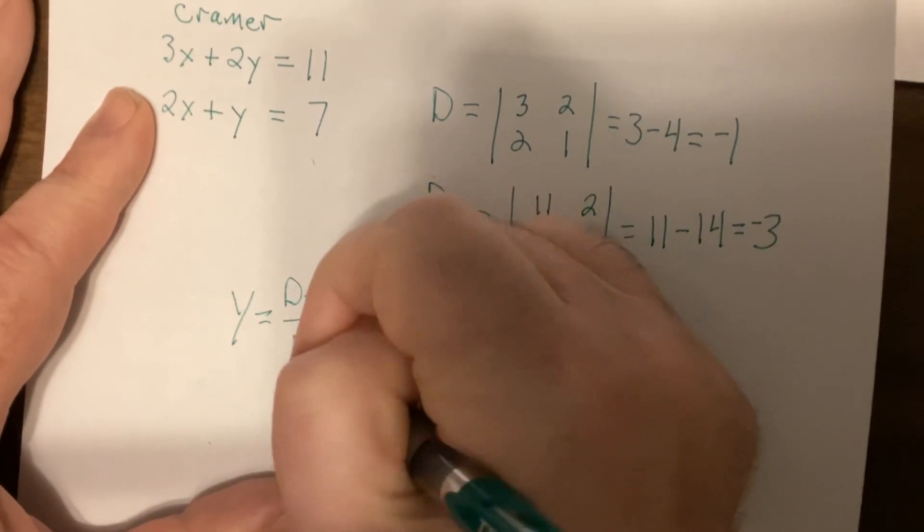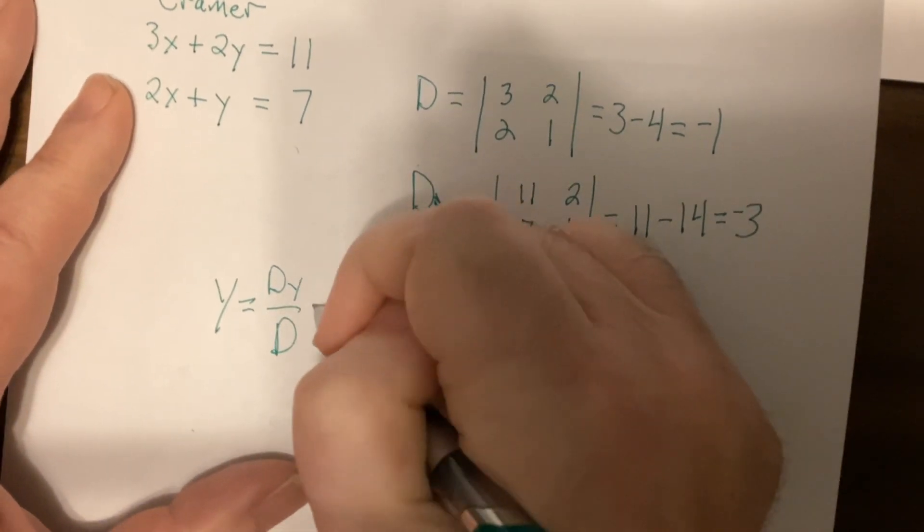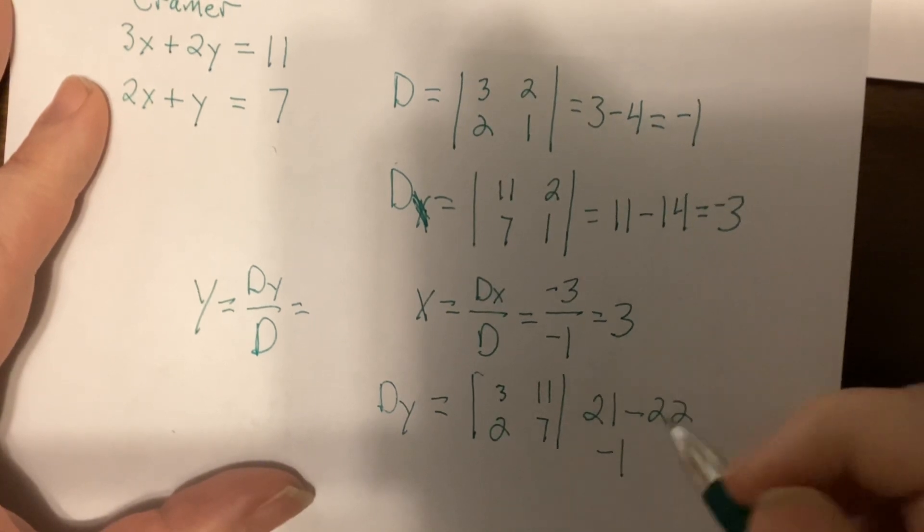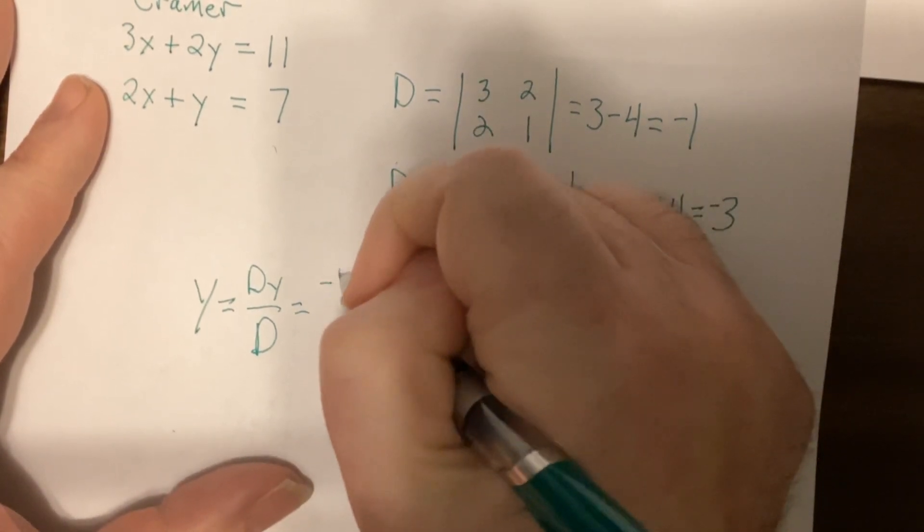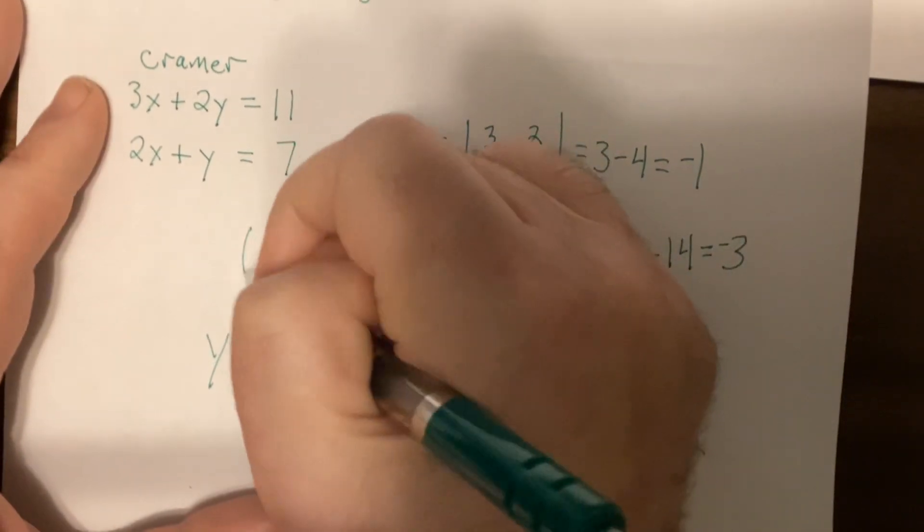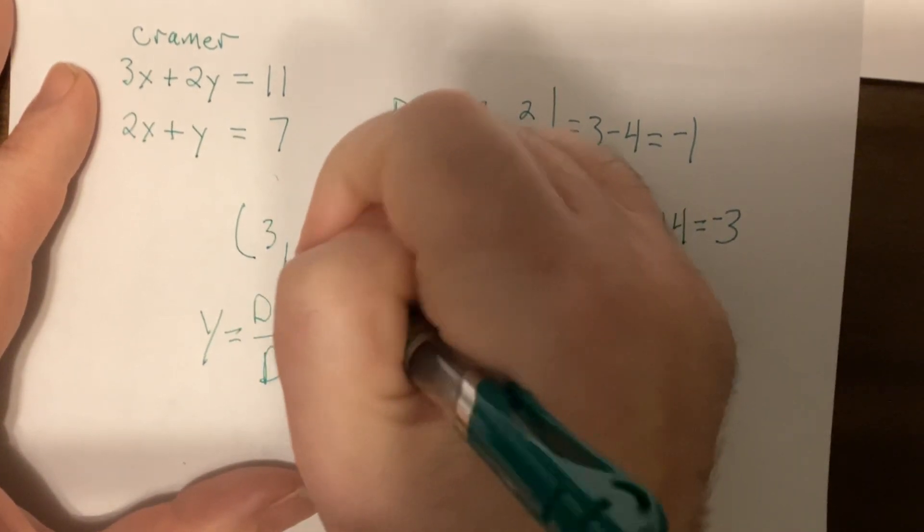So it'd be 21 minus 22, which is negative 1. And I'll bring it up over here. y is Dy over D, excuse me, which is negative 1 divided by negative 1, which is 1. So the answer would be (3,1).